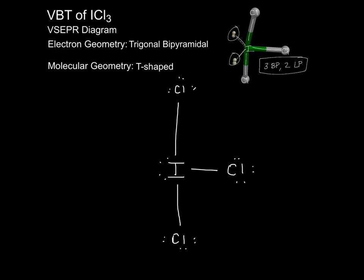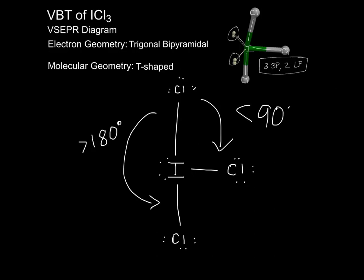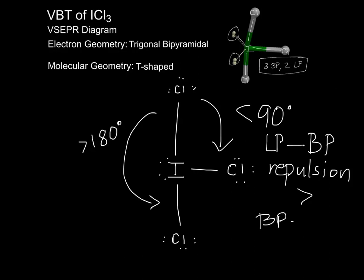As for the bond angles, there are two: greater than 180 degrees, as well as less than 90 degrees, due to the fact that lone pair-to-bond pair repulsion is greater than bond pair-to-bond pair repulsion.